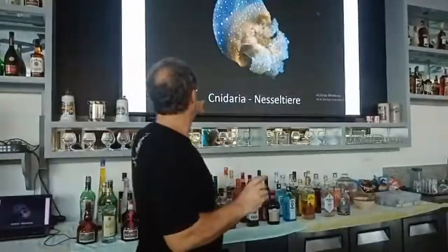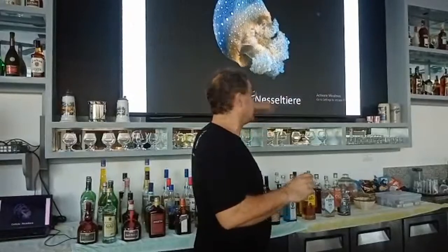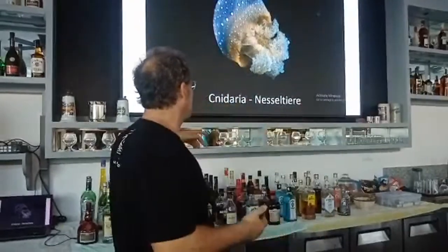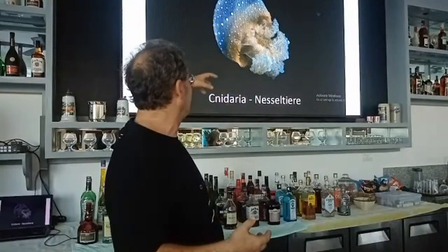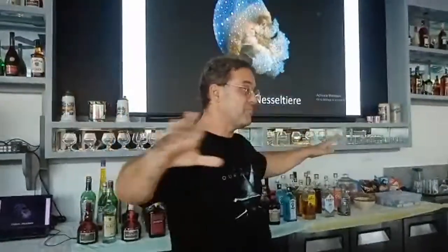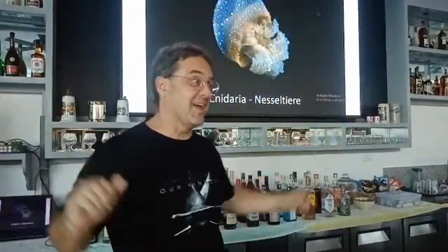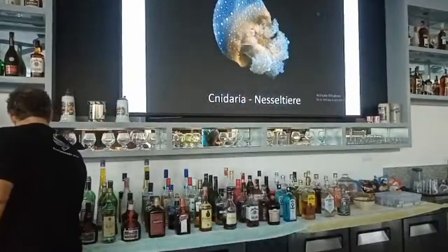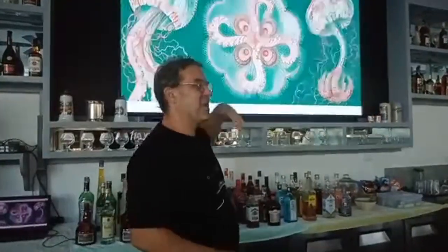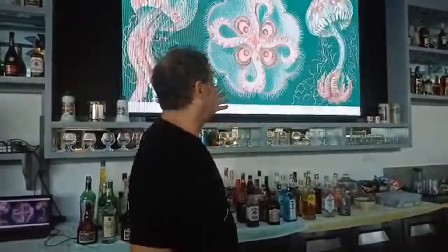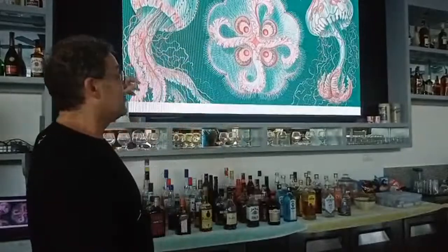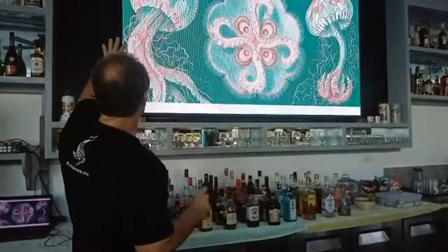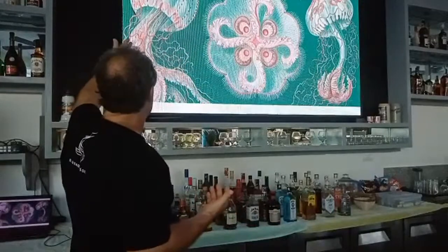All corals belong to the Cnidaria. In German we have 'Nesselthiere,' which means stinging animals — a pretty good description. The Cnidaria are a large phylum, one of the biggest groups in the animal kingdom, and they include the jellyfish. If you look at one of the nice drawings by the famous German 19th-century naturalist Ernst Haeckel — this was a time when art and science were close — the drawings are both really beautiful and very illustrative of what's going on.